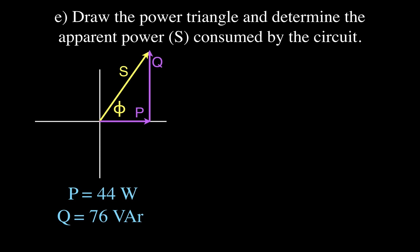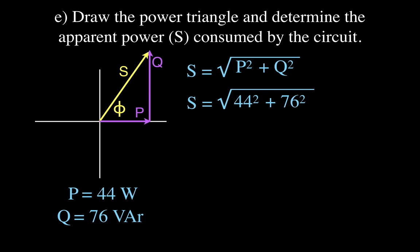The angle between the real power and apparent power is the phase angle — the same angle as from the impedance triangle. Using the Pythagorean theorem, apparent power S equals the square root of P squared plus Q squared: the square root of 44 squared plus 76 squared, which gives apparent power S equals 88 VA.